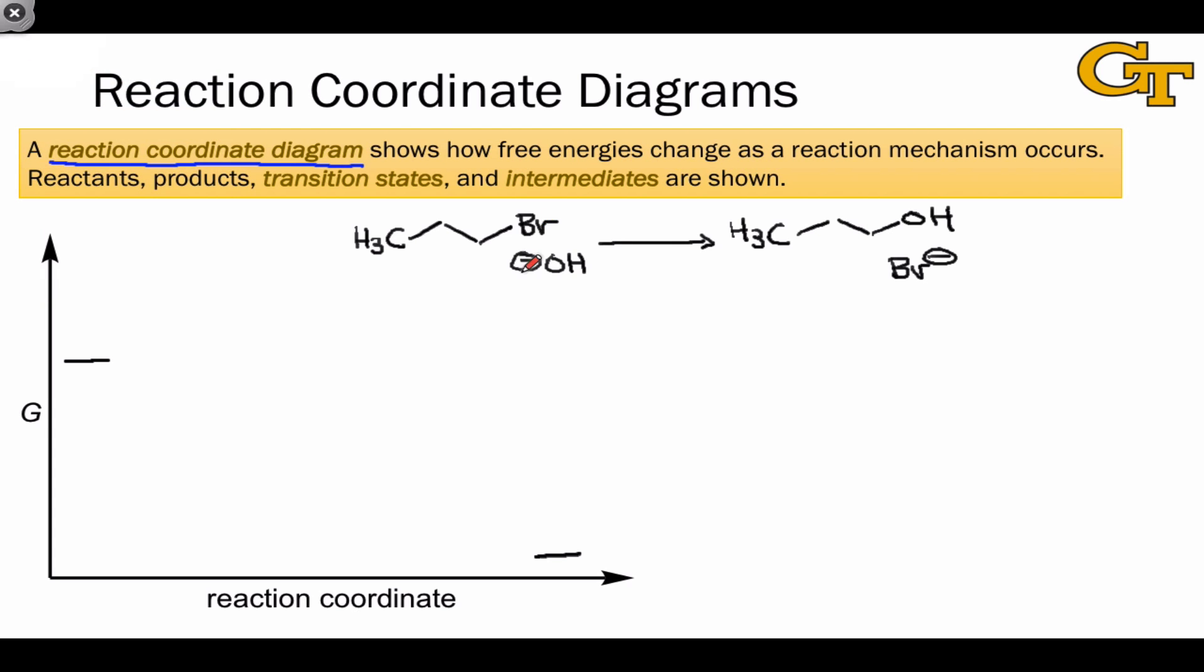And for the time being, take my word for it that this reaction occurs in a single elementary step involving displacement of the bromide anion by the hydroxide anion. As the hydroxide approaches this molecule and displaces the bromide, the energy of the assembly of molecules changes.